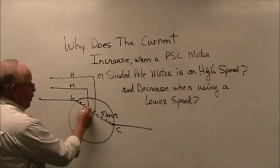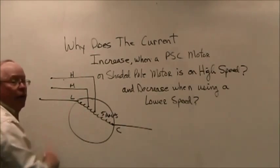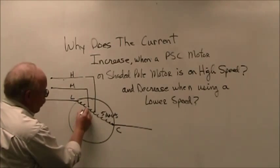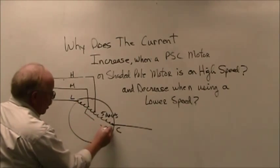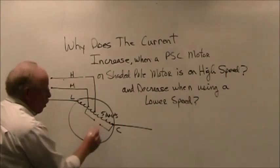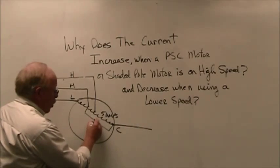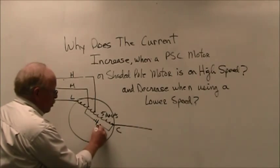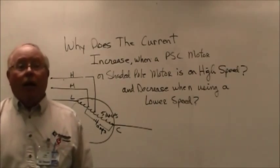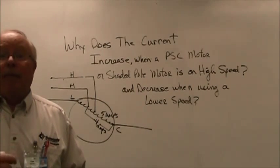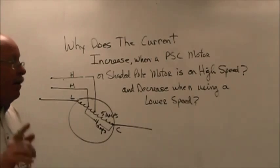Now, if I add more resistance by changing the winding from high to medium, now with going through more resistance, that's going to cause maybe the amp draw to drop to 4 amps. At 4 amps, my magnetic field is not going to be as strong and the rotor is going to slip and it's going to go slower.